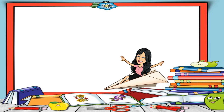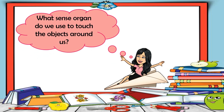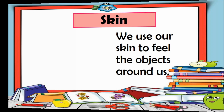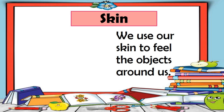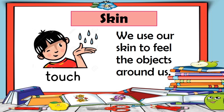First, let's answer this question. What sensory organ do we use to touch the objects around us? Our skin. We use our skin to feel the objects around us.